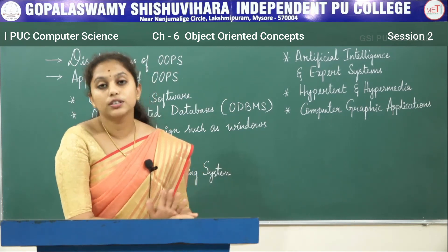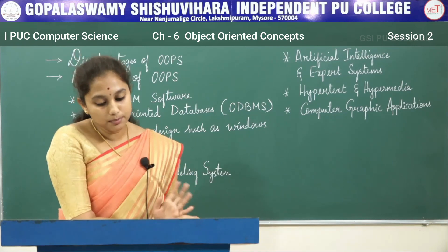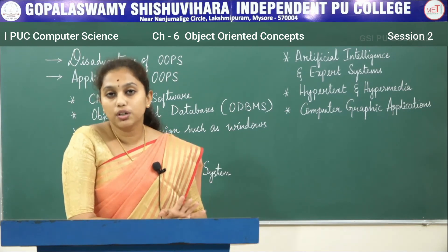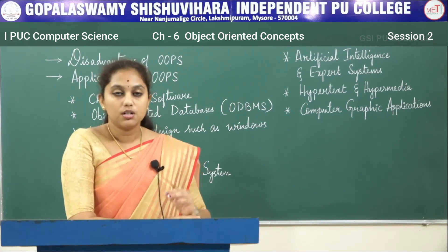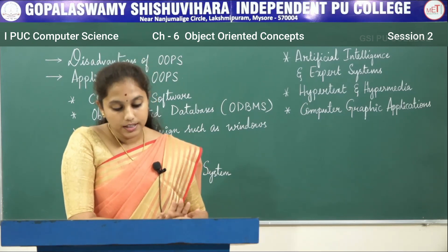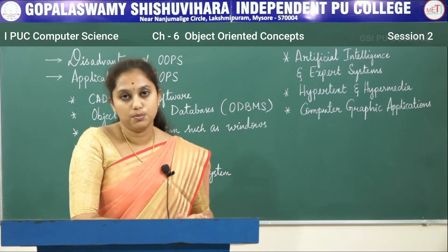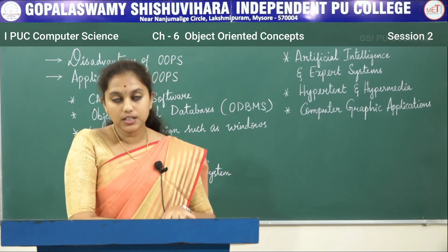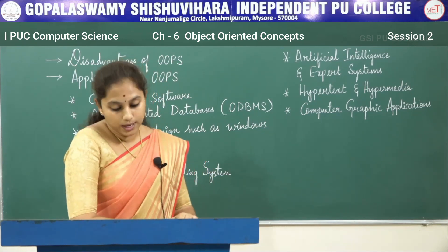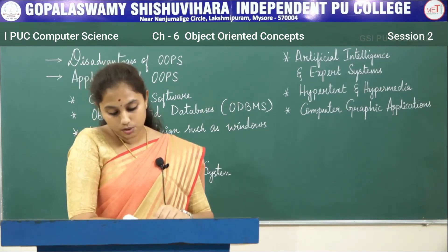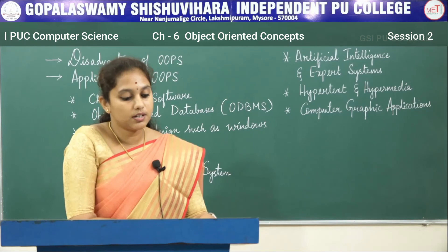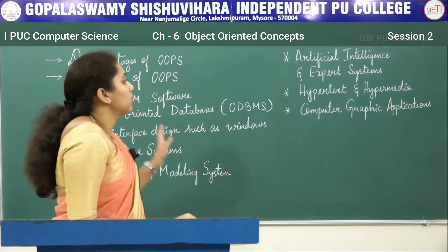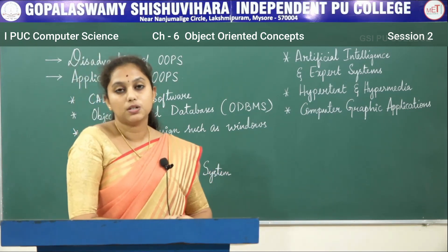Those are all the one-mark questions. For five-mark questions, they will usually ask: Write the difference between procedure-oriented and object-oriented programming models. Second question: Explain the advantages of OOPs. Third question: Write the disadvantages of object-oriented programming. And the last question: Write the real-life applications of object-oriented programming.